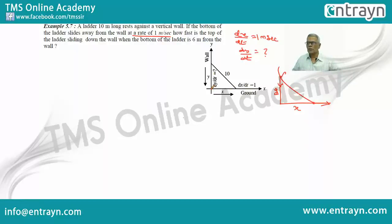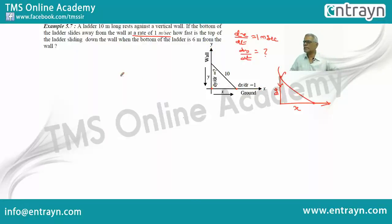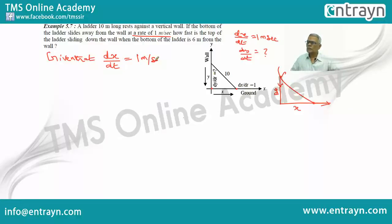This is the bottom of the wall, this is the bottom of the ladder, and this is X. As X moves away from the wall at the rate of 1 meter per second, dx/dt is 1 meter per second. Given that dx/dt is equal to 1 meter per second.